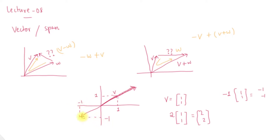The direction is opposite because of the minus one. This is the simple vector operation.